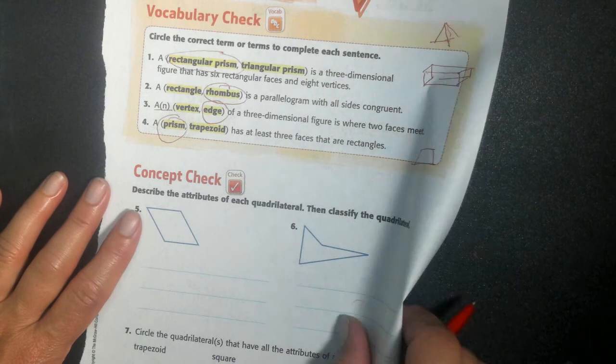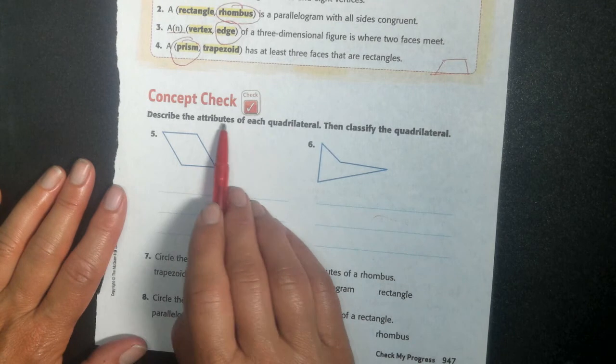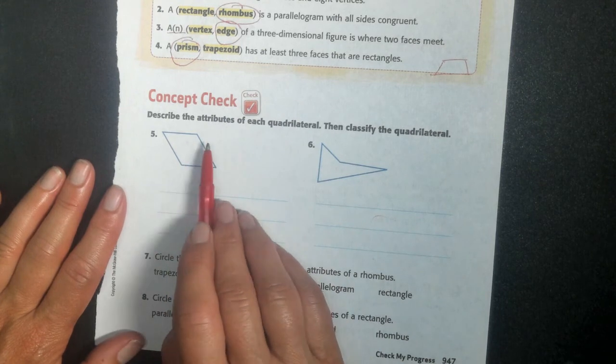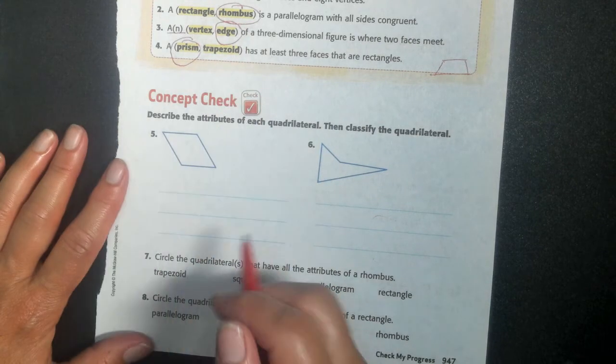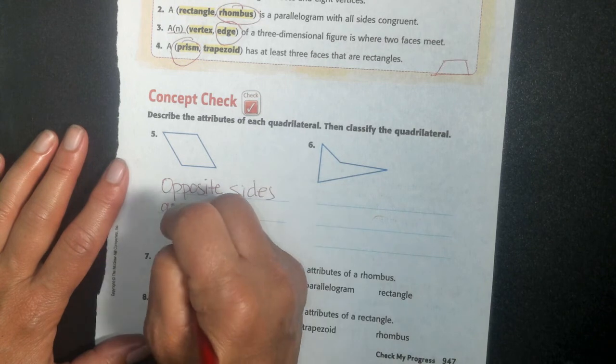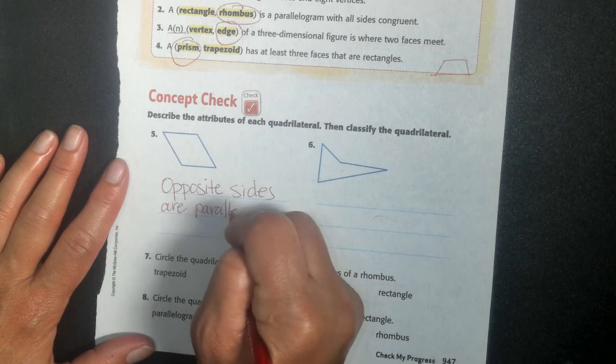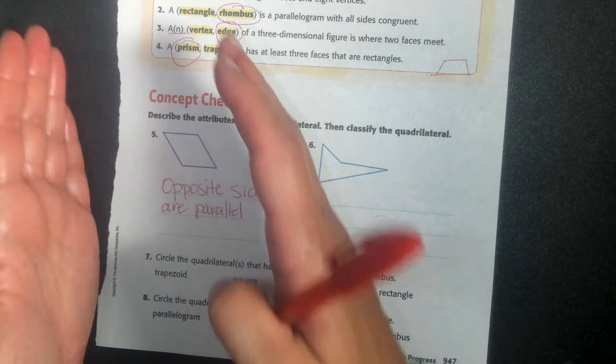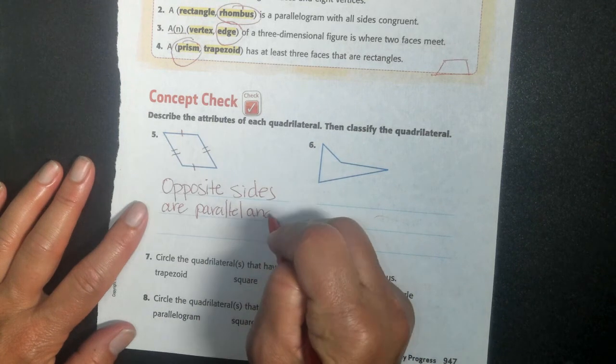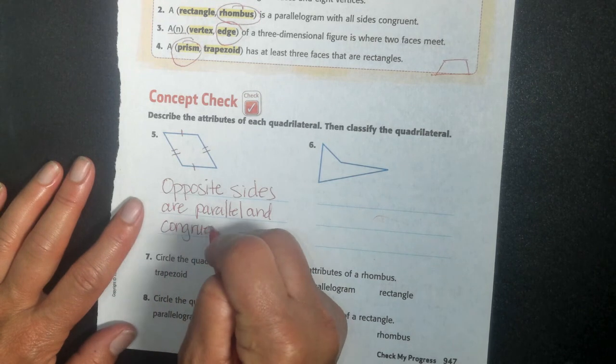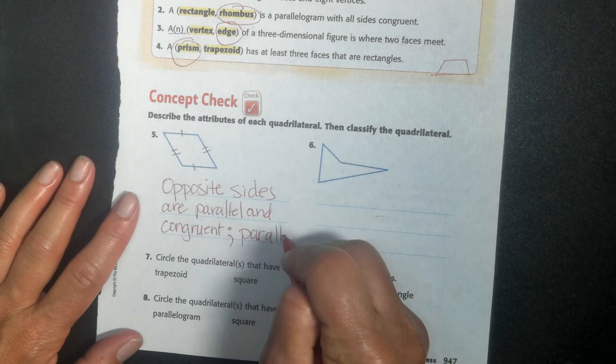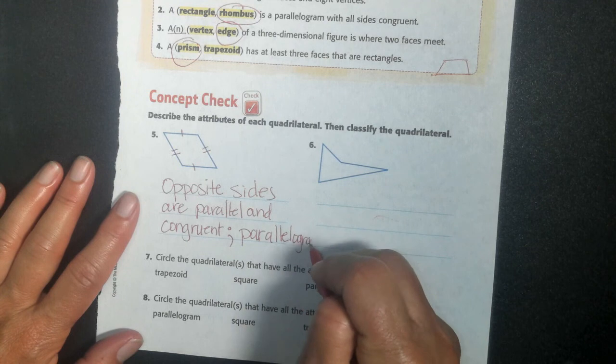So describe the attributes of each quadrilateral, then classify the quadrilateral. Well, it looks like opposite sides are congruent and equal, and they're going the same length. So I'm going to say opposite sides are parallel. They're running next to each other. They're going to just keep going. They've never touched. And congruent. This is the same length as this, and this is the same length as this. And what is that shape called? Yes, you're right. Good answer. My Dora the Explorer. Sorry. I have to do it. It's like a thing now. Parallelogram.